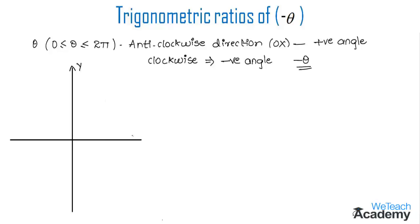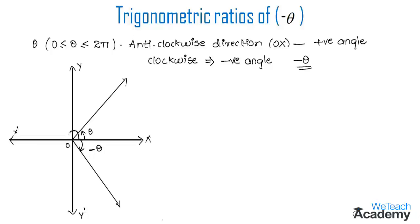Let me explain this concept using a rough diagram. Here we have a coordinate plane with the y-axis, x-axis, origin, and the negative x-axis labeled as X' and negative y-axis as Y'. A ray making angle theta in the anti-clockwise direction gives a positive angle, while the same ray measured clockwise gives the negative angle, minus theta. We can also write minus theta as 2π minus theta, since a complete angle is 360 degrees.